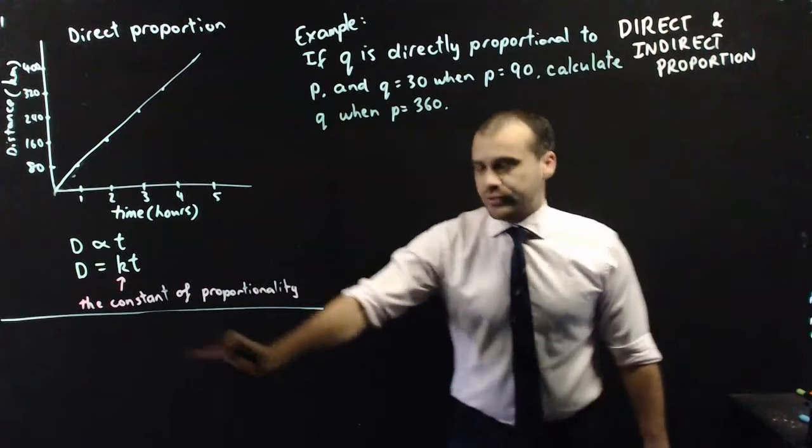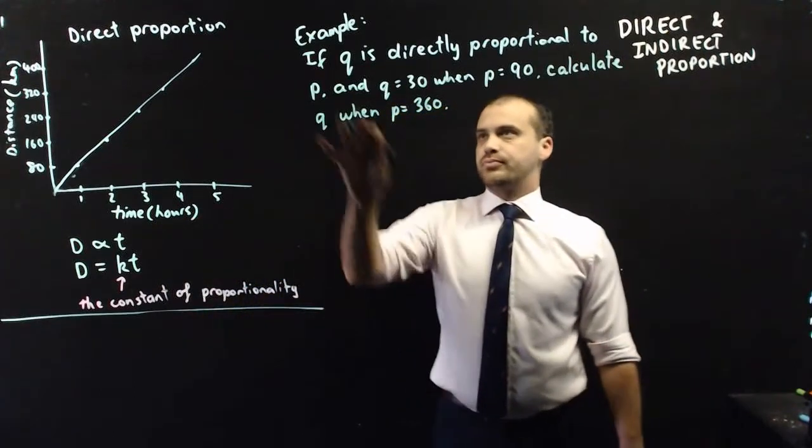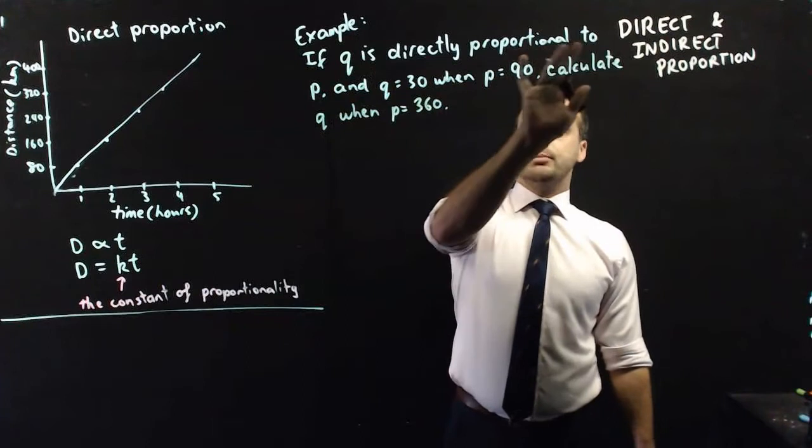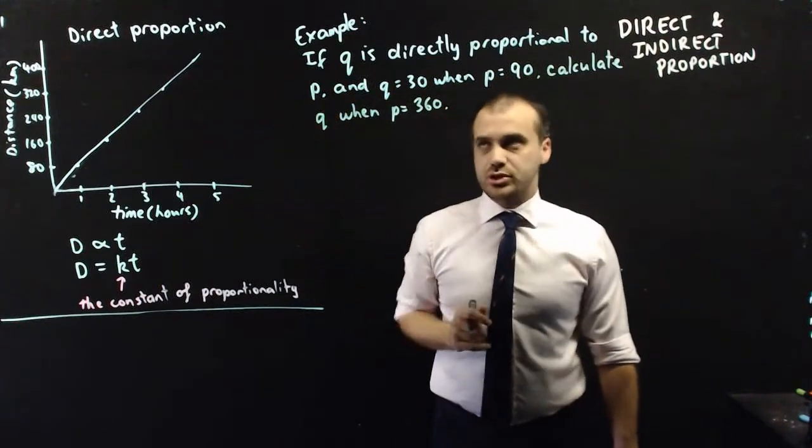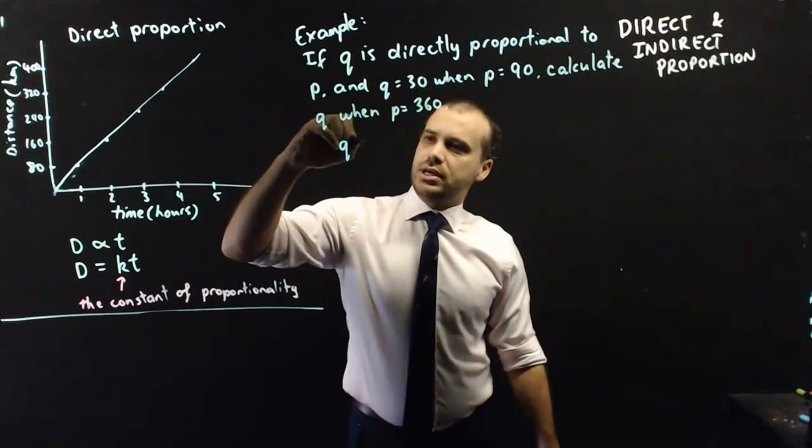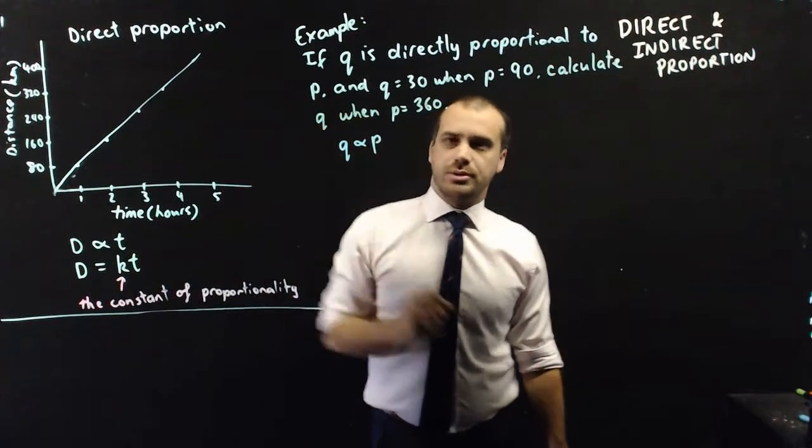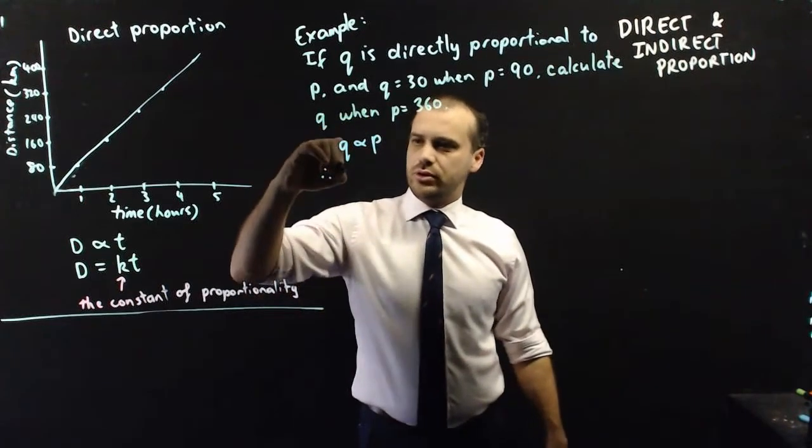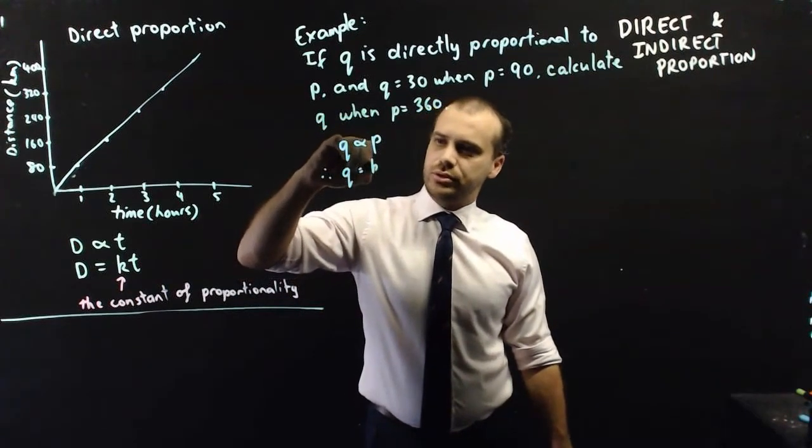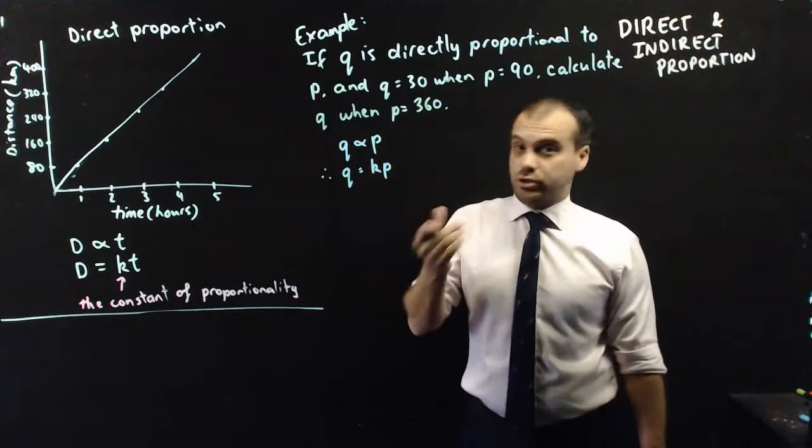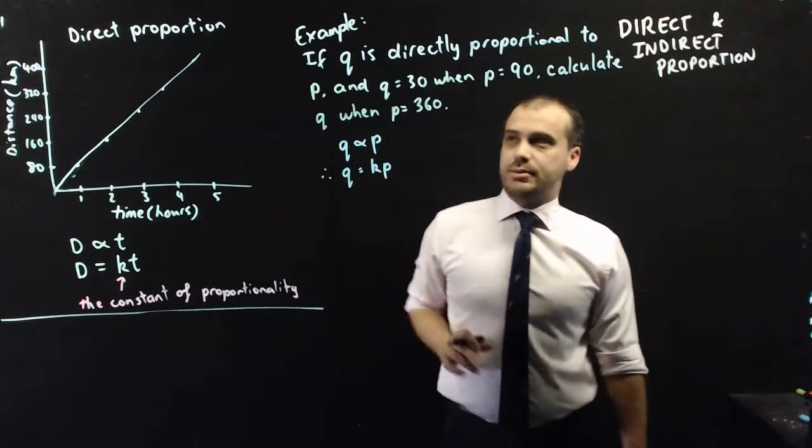So, a very brief example of this idea in action. If q is directly proportional to p, so I'm going to stop there. q is directly proportional to p. Therefore, q is equal to kp, where k is some constant of proportionality. All right, let's keep going.